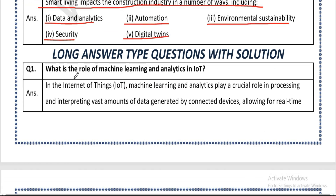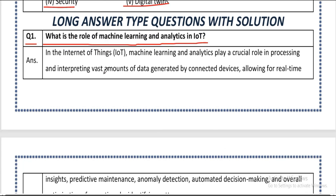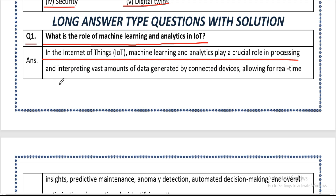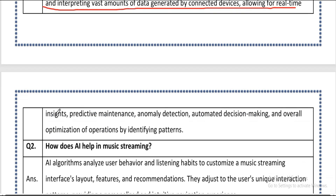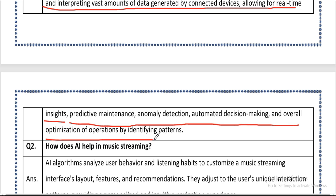Now, long answer type questions. Question one: what is the role of machine learning and analytics in IoT? Answer: in the Internet of Things, machine learning and analytics play a crucial role in processing and interpreting vast amounts of data generated by connected devices, allowing for real-time insights, predictive maintenance, anomaly detection, automated decision-making, and overall optimization of operations by identifying patterns.